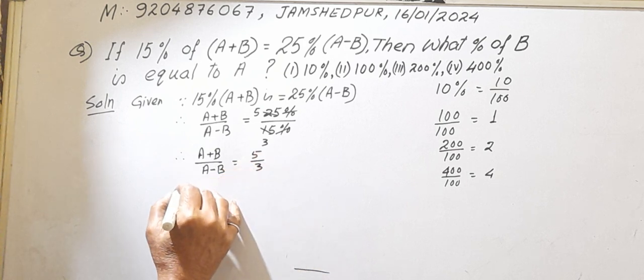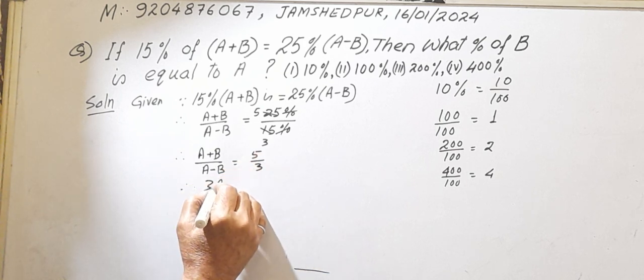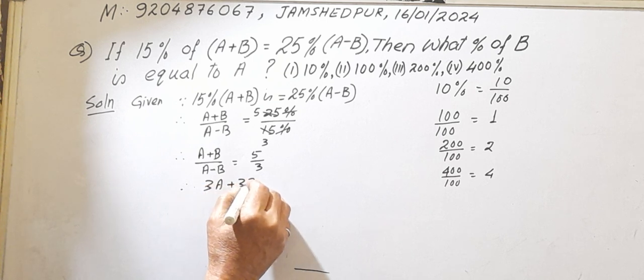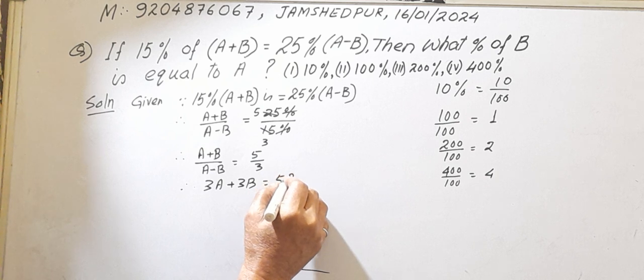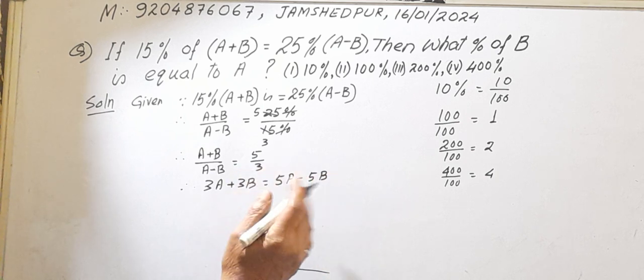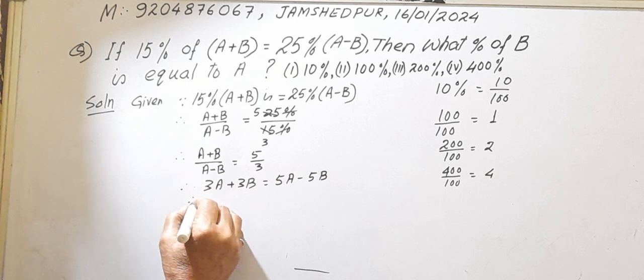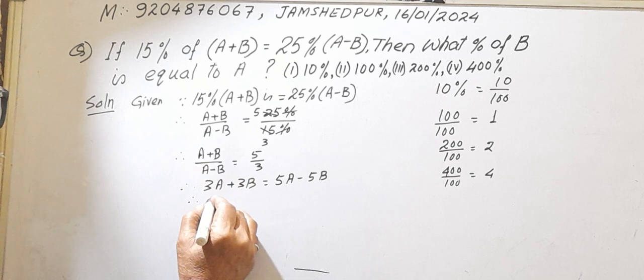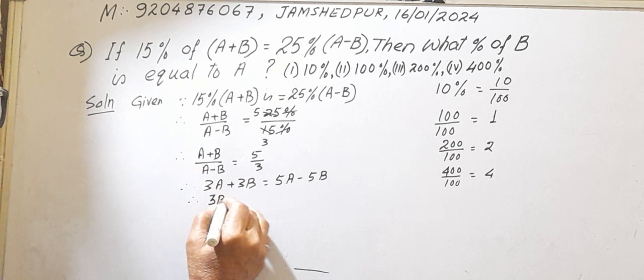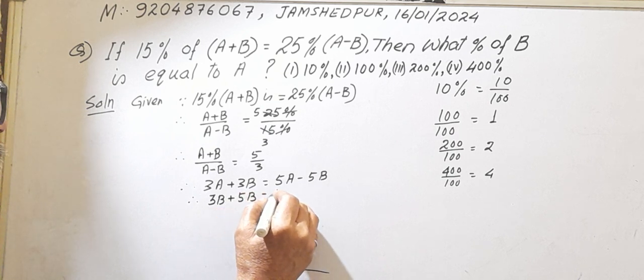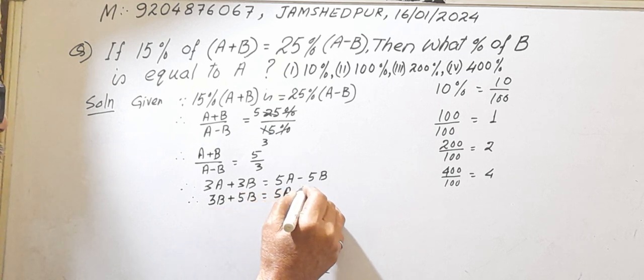Now 3A plus 3B equal to 5A minus 5B. Transfer to like terms: 3B plus 5B equal to 5A minus 3A.